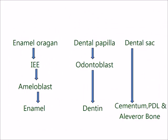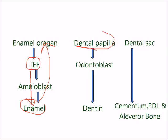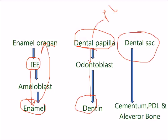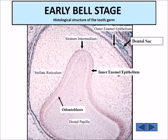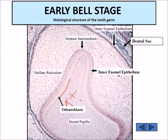The enamel organ's inner enamel epithelium cells differentiate into ameloblasts, which produce enamel — so enamel is ectodermal in origin. The dental papilla gives us the odontoblasts which produce dentine, and also the pulp. The dental sac gives us the tooth supporting structures: cementum, the periodontal ligament, and the alveolar bone. In the bell stage, the peripheral cells of the dental papilla will give us the odontoblasts and the remaining cells will give us the pulp.